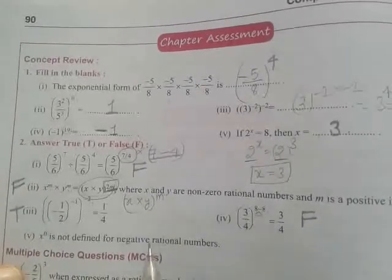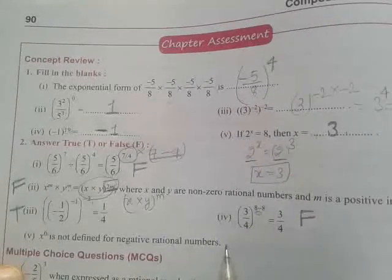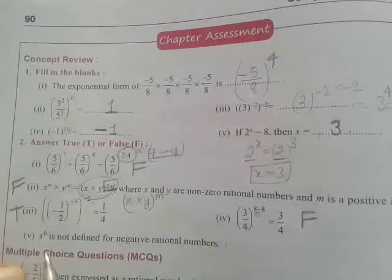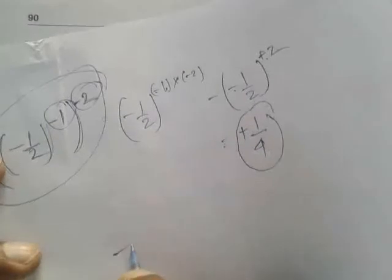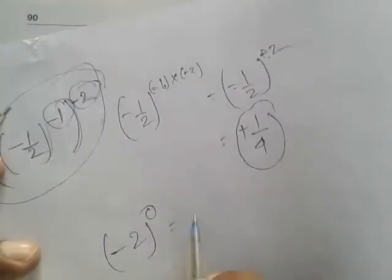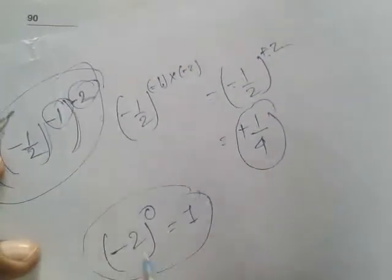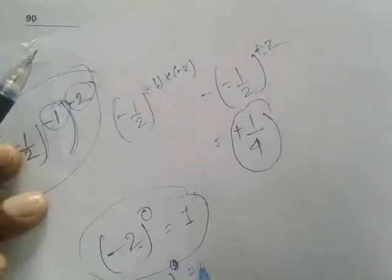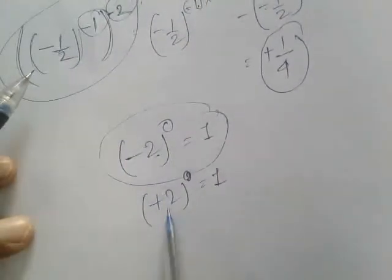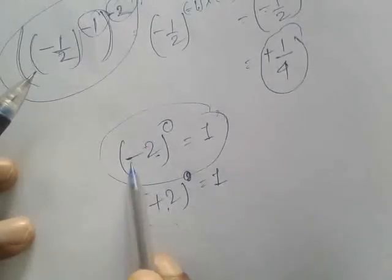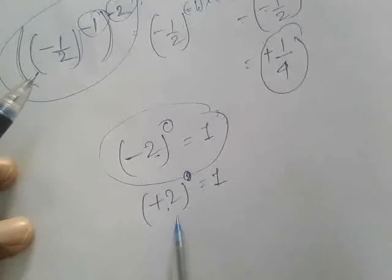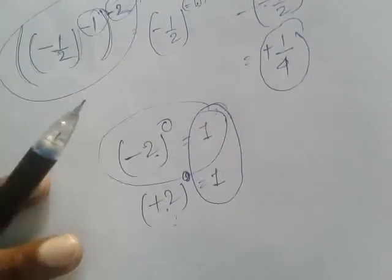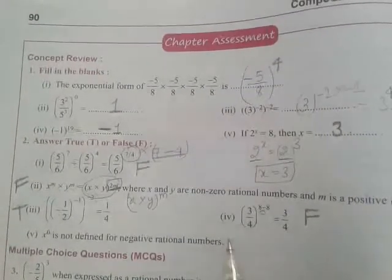Next: x raised to the power 0 is not defined for negative rational numbers — this is also false. For example, (-2) raised to the power 0 is always 1. Any rational number, whether negative or positive, raised to the power 0 always equals 1. Therefore this is also a false statement.